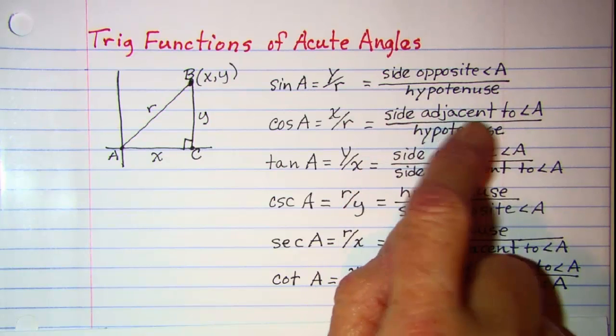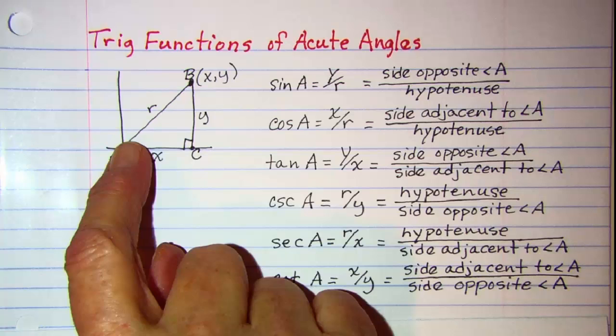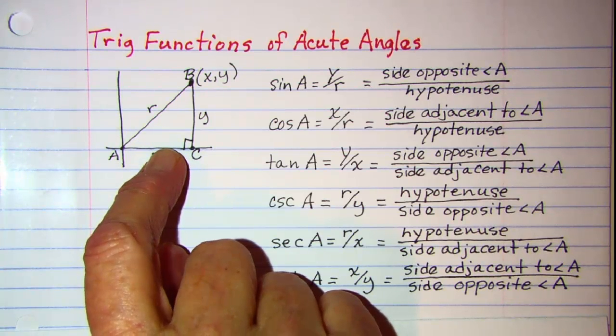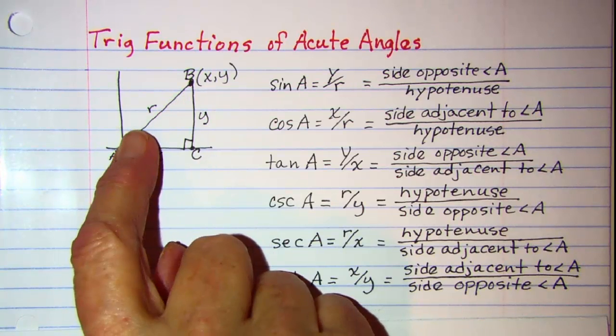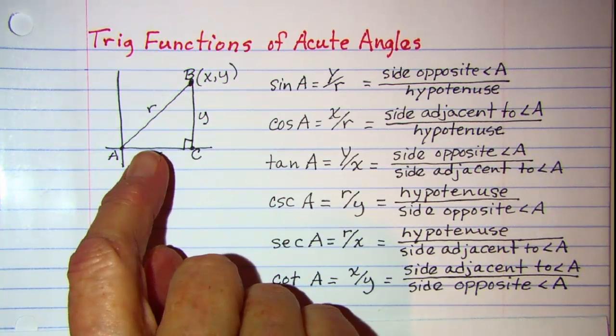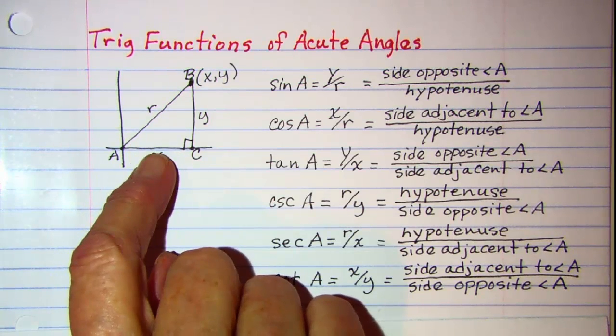And then the side adjacent is, again if you are standing in this corner, it is the side you can touch. Now of course you can touch the hypotenuse also, but that already has the special name hypotenuse. So the side adjacent is the one you can reach over and touch.